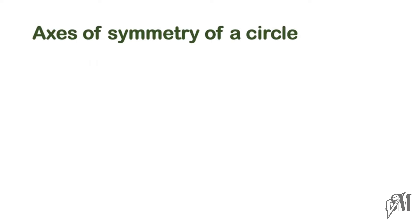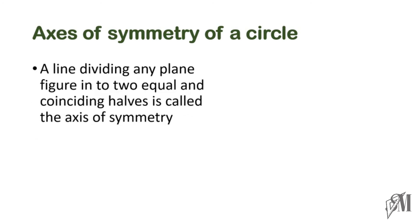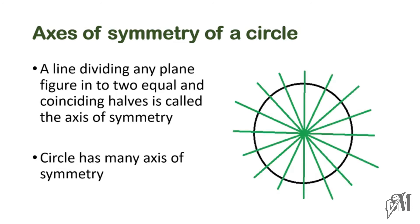What is an axis of symmetry? I'll recall the knowledge. It is a line dividing any plane figure into two equal and coinciding halves. So a circle has many axes of symmetry like this, and then we are going to look into the parts of a circle.